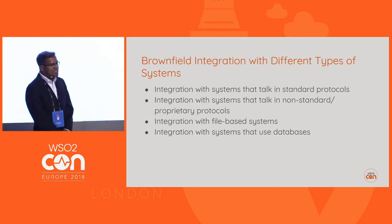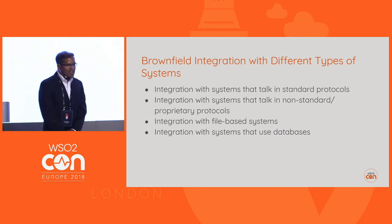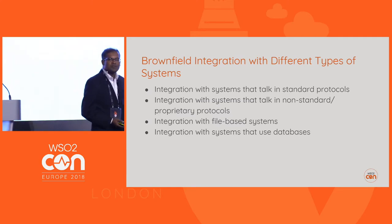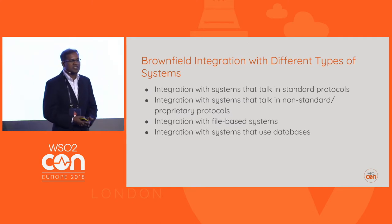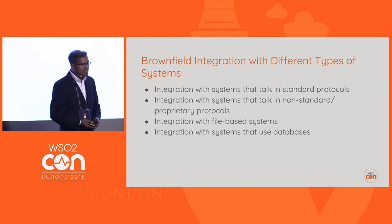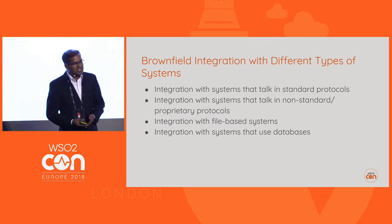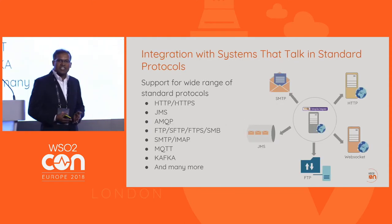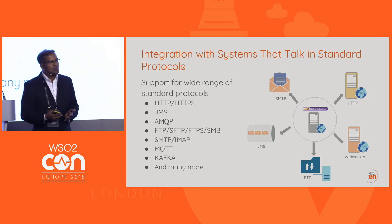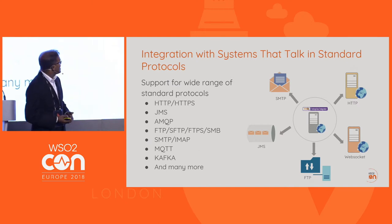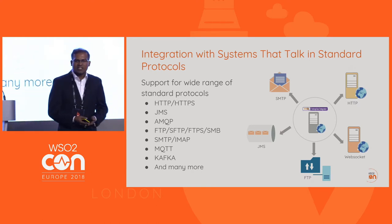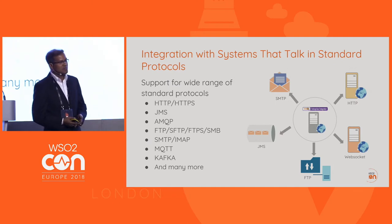So let's look at different types of brownfield integration and how we can do this. There are integrations with systems that talk in standard protocols, integrations with systems that talk in non-standard protocols, and then systems where we might have to use the database as the integration point. Integration with systems that talk in standard protocols is quite easy and straightforward with the Enterprise Integrator, which has comprehensive support for standard protocols like HTTP, JMS, AMQP, and so on.